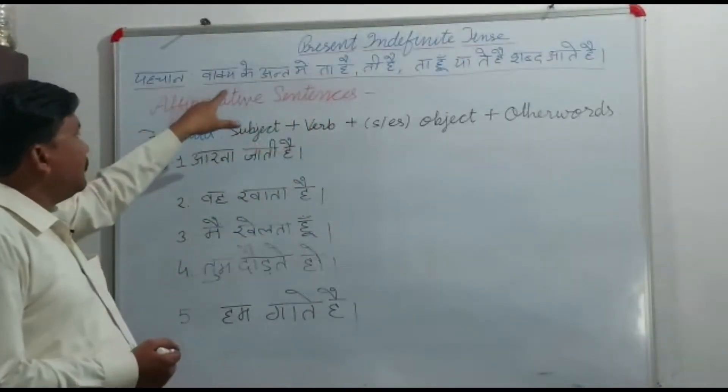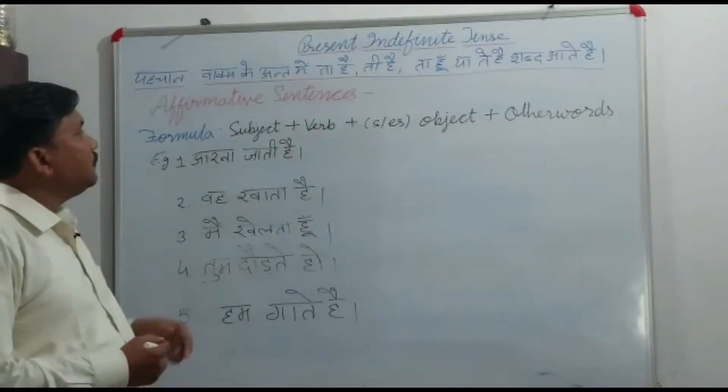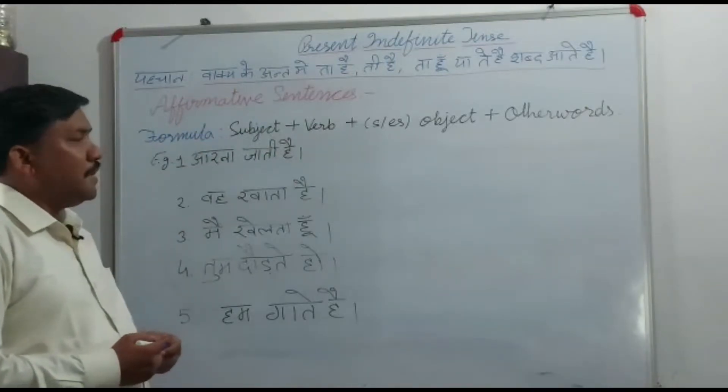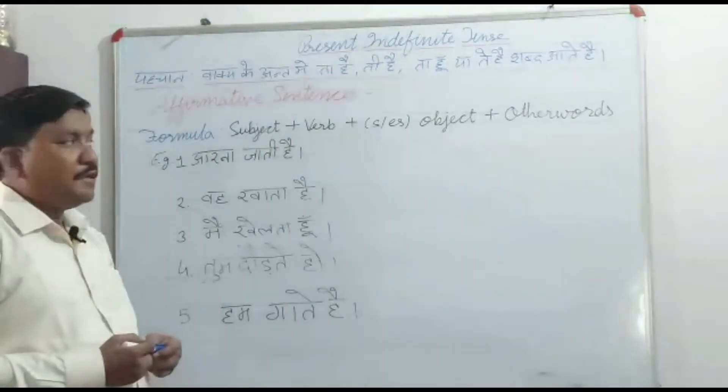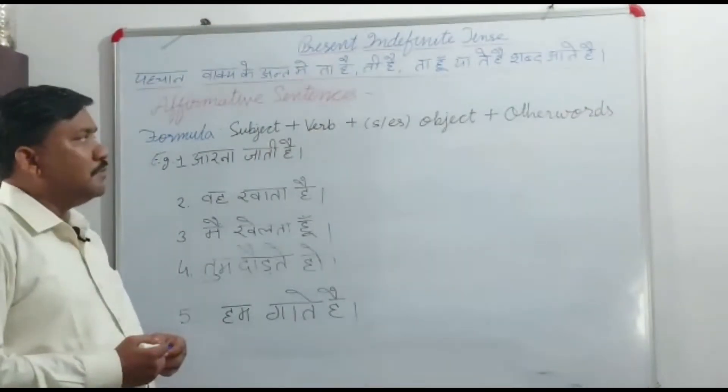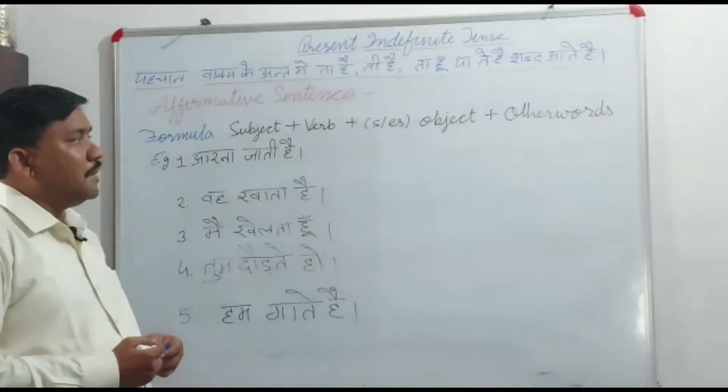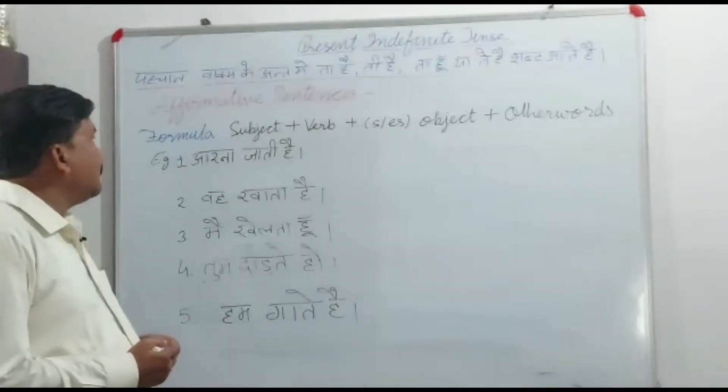Present Indefinite Tense ki pehchan: Vaakya ke ant mein 'ta hai', 'ti hai', 'te hai', 'ta hoon', ya 'te hai' shabd aate hain.